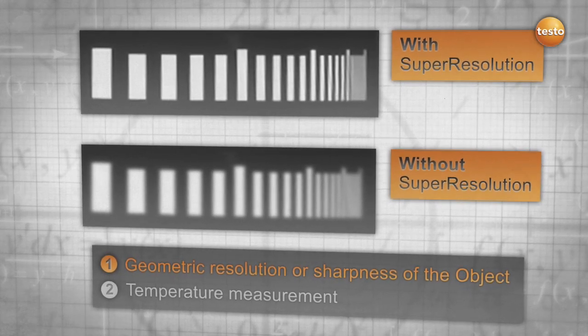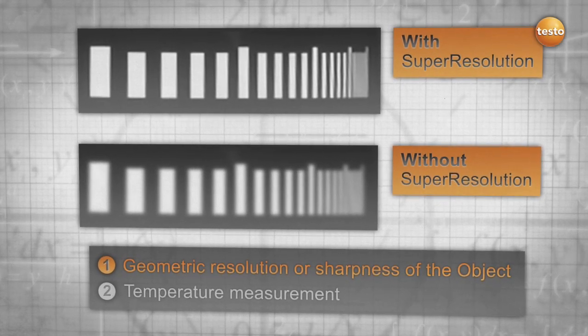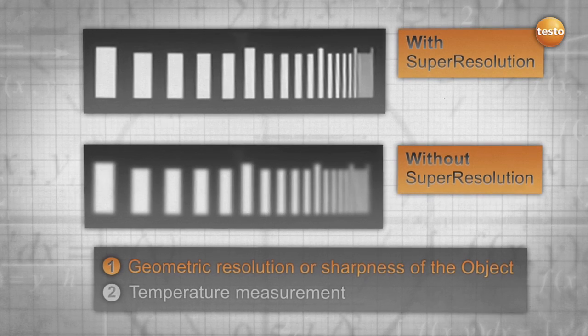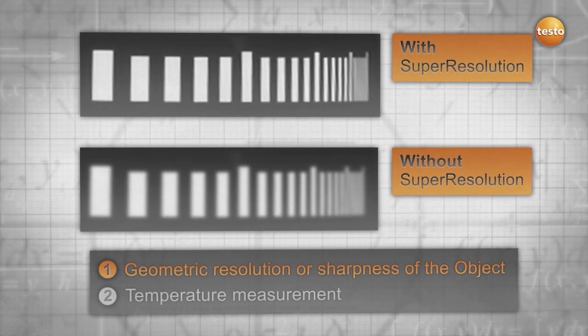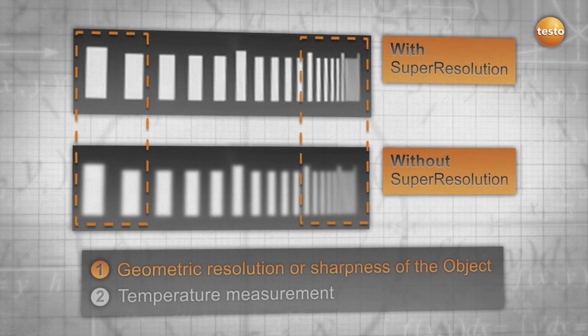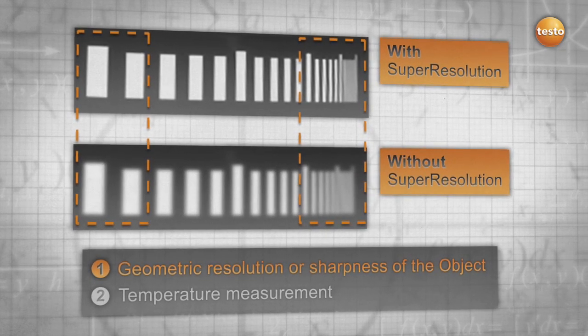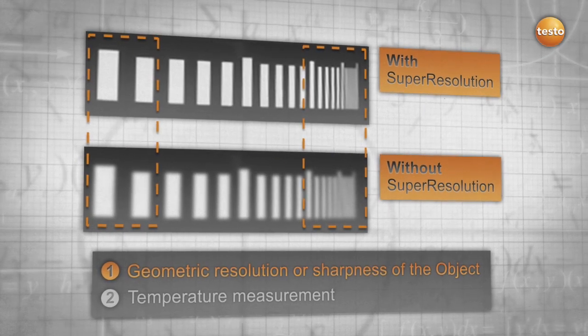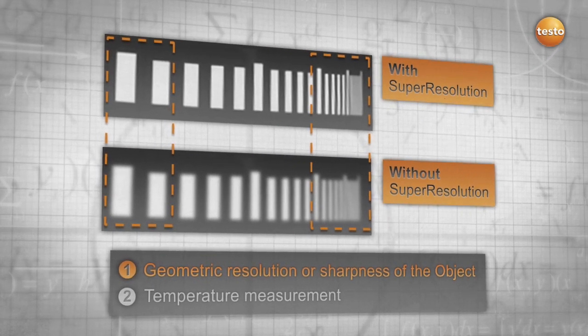The difference is clearly seen in this test. A gobo with vertical slots of different widths and distances is placed in front of a black body that has a certain temperature. Without super-resolution, you get a blurry image. The smaller and denser the slots, the more blurry the image. With super-resolution, you get a sharper and more detailed image.